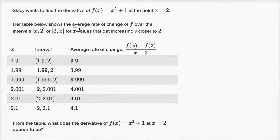We're talking about the average rate of change of f over these closed intervals for x values that get increasingly closer to 2. It looks like we're going to be dealing with some type of limit - we're trying to calculate or approximate some type of limit.